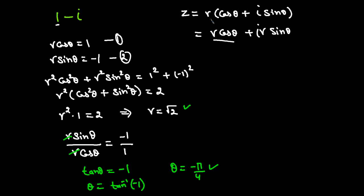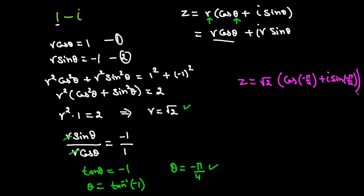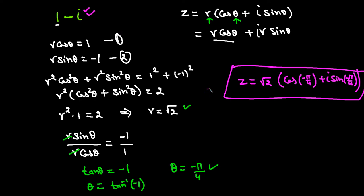Now we have R equals square root of 2 and theta equals negative pi over 4. Plugging into the polar form: Z equals square root of 2 times (cosine(negative pi over 4) plus iota sine(negative pi over 4)). This is the polar form of 1 minus iota.